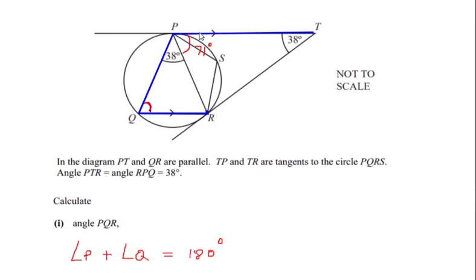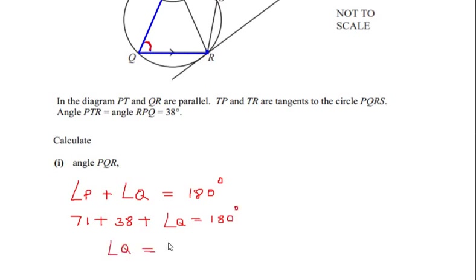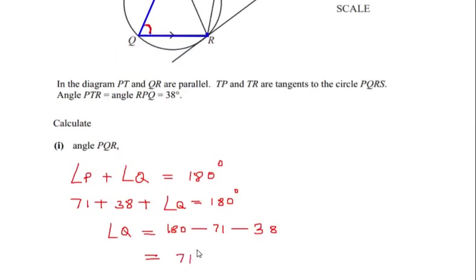Co-interior angles add up to 180 degrees using the properties of parallel lines. Angle P is the total angle enclosing 71 degrees and 38 degrees, so: 71 plus 38 plus angle Q equals 180 degrees. Solving this gives angle Q equals 180 minus 71 minus 38, which equals 71 degrees. So angle PQR is 71 degrees.